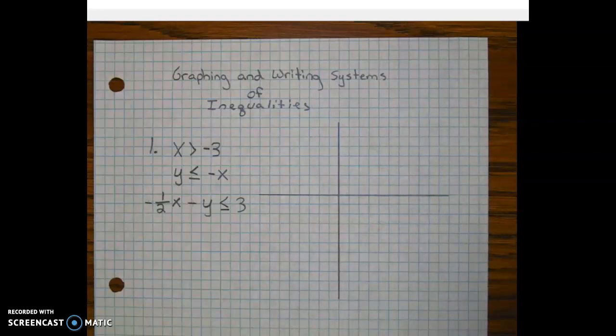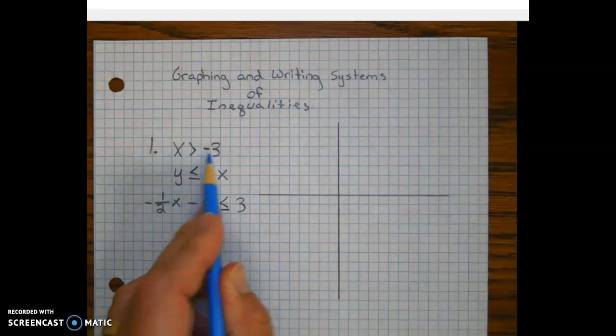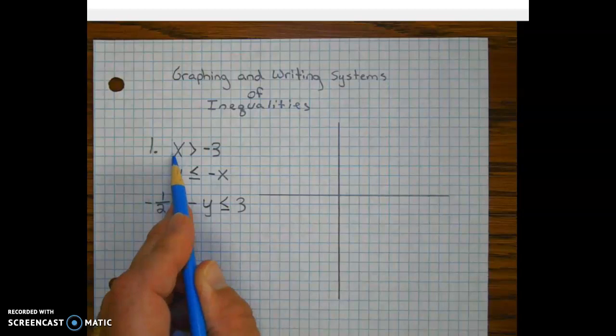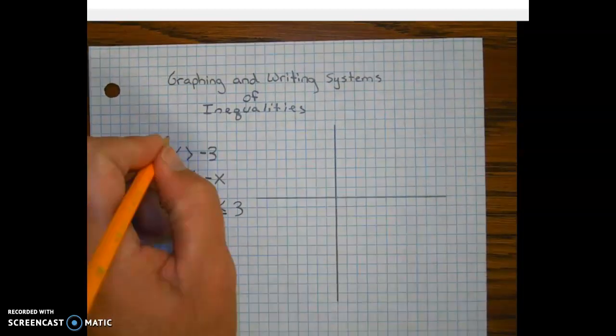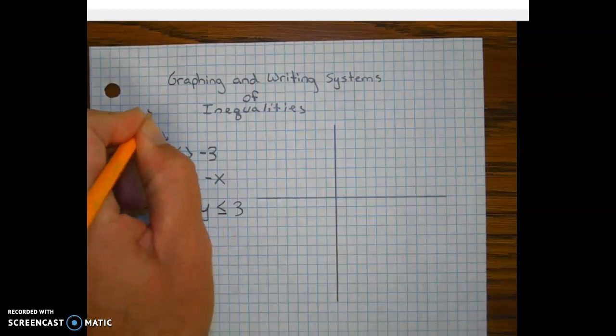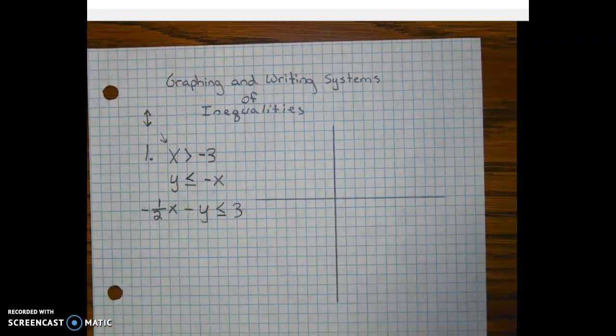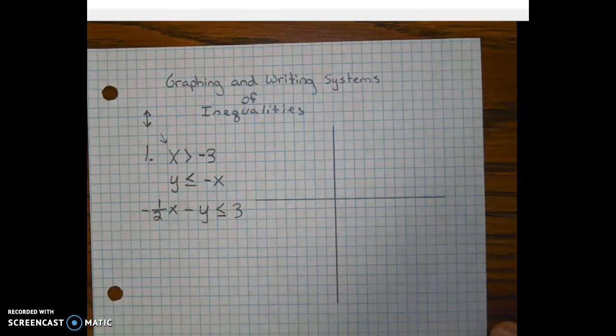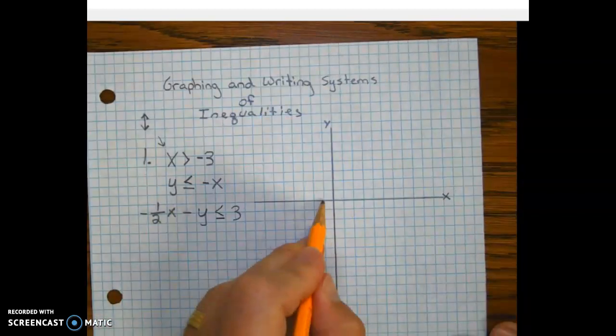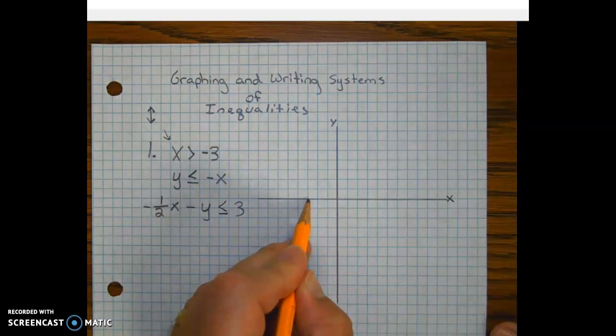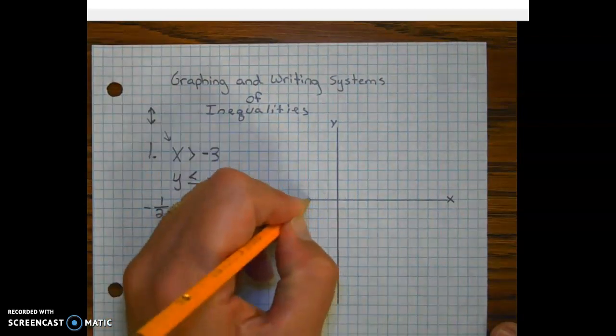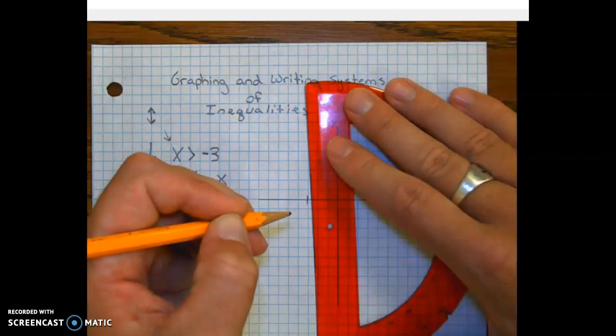To graph this first inequality, notice that the y variable is missing. Remember that when you have an inequality or equation that starts with x, it's going to be a vertical line. This vertical line is going to go through the point negative 3 on the x-axis. Since it's an inequality, we need to check if we have a solid line or a dashed line. Since it's missing an equal part, we're going to put a dashed line at negative 3.